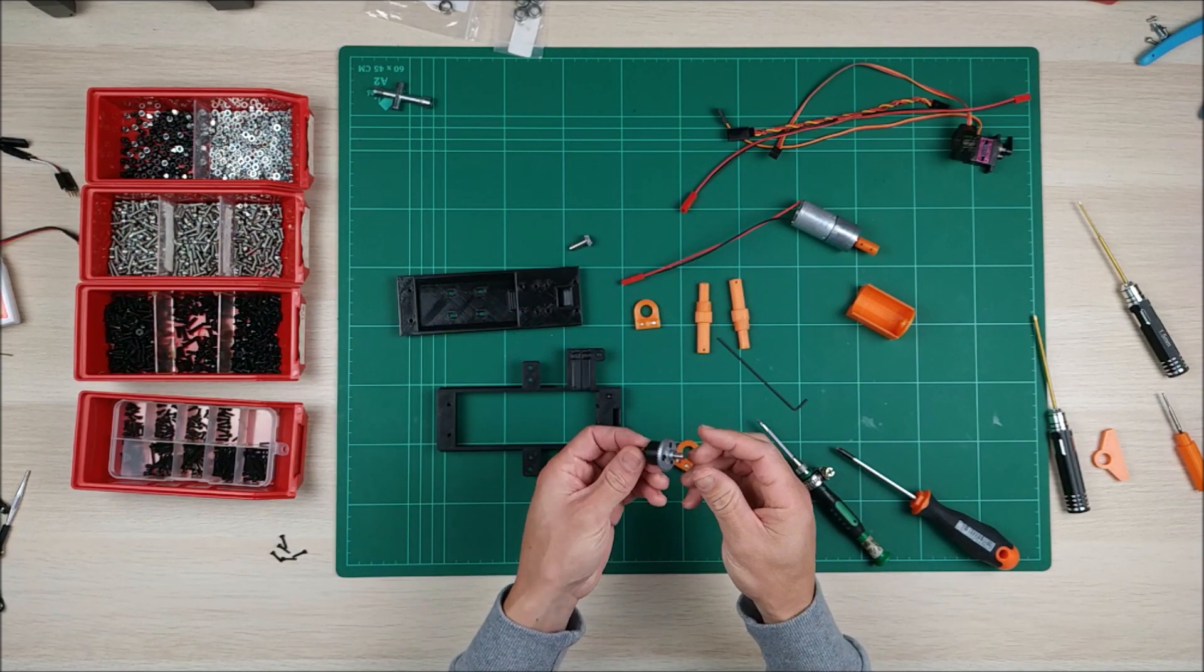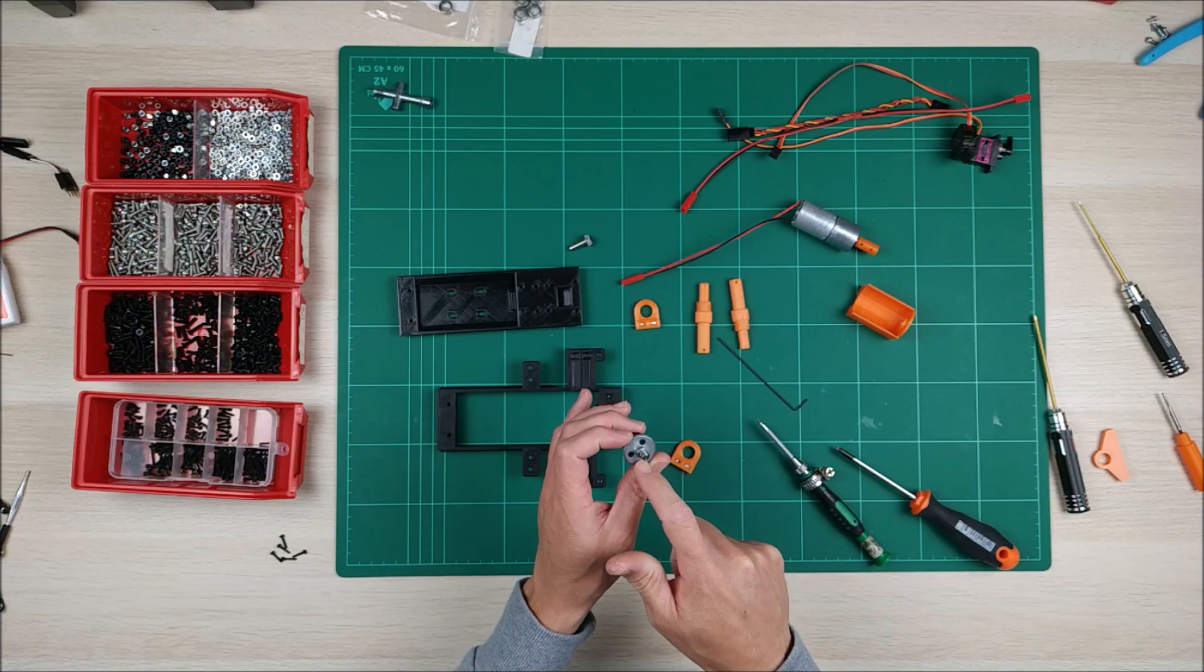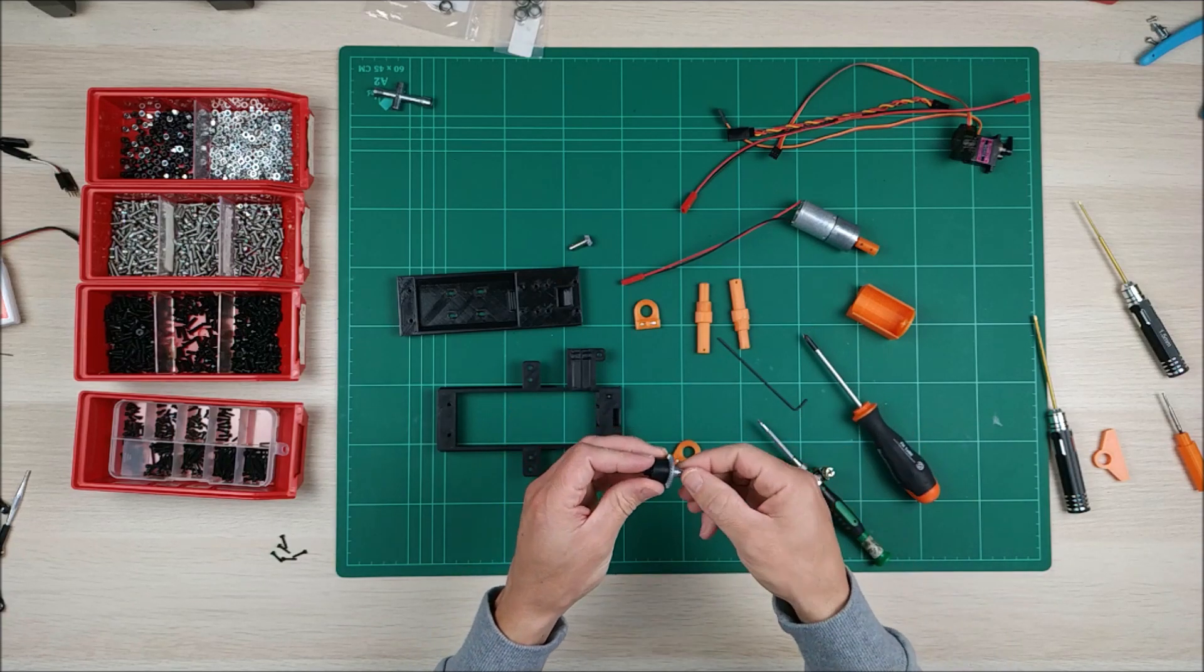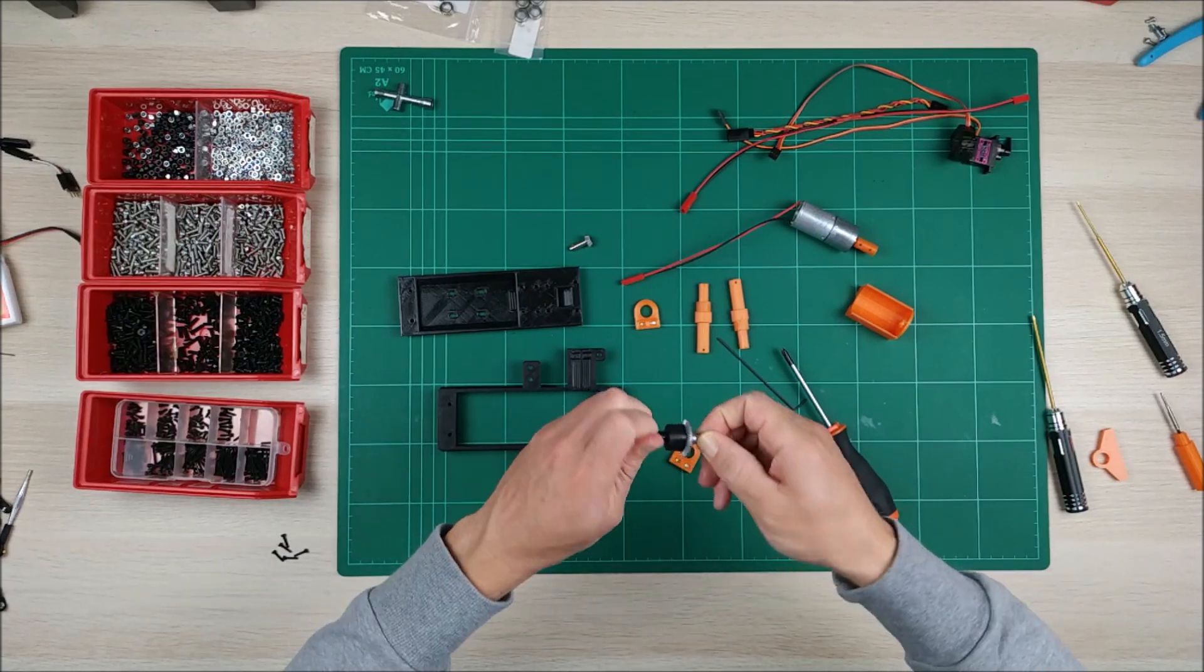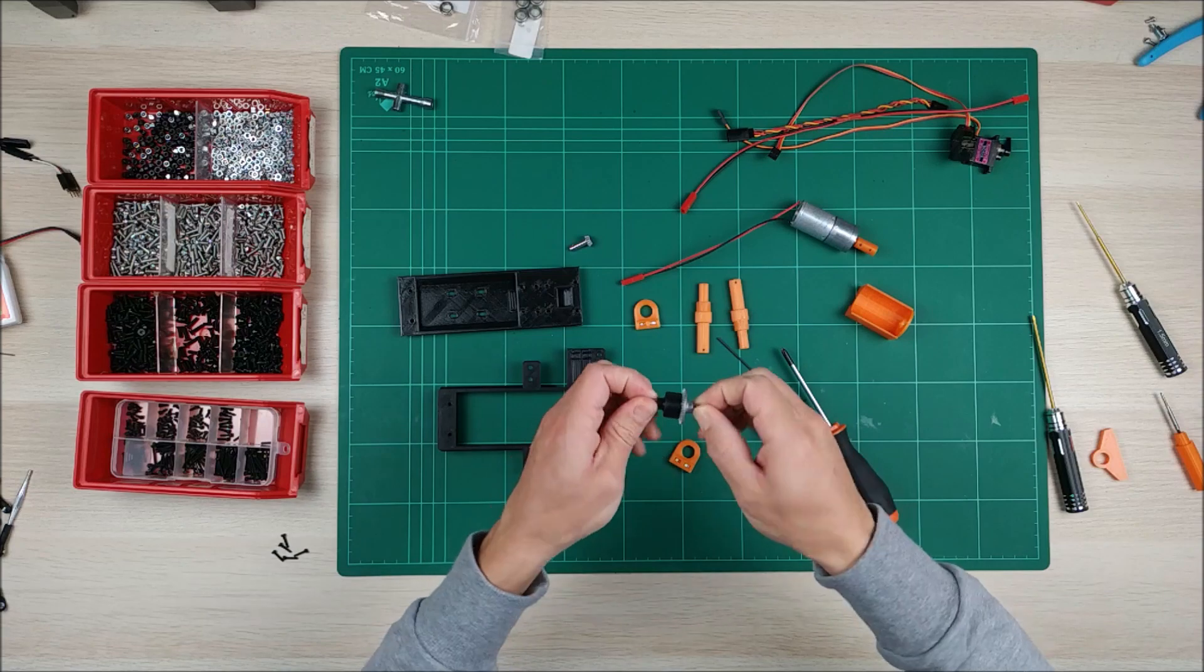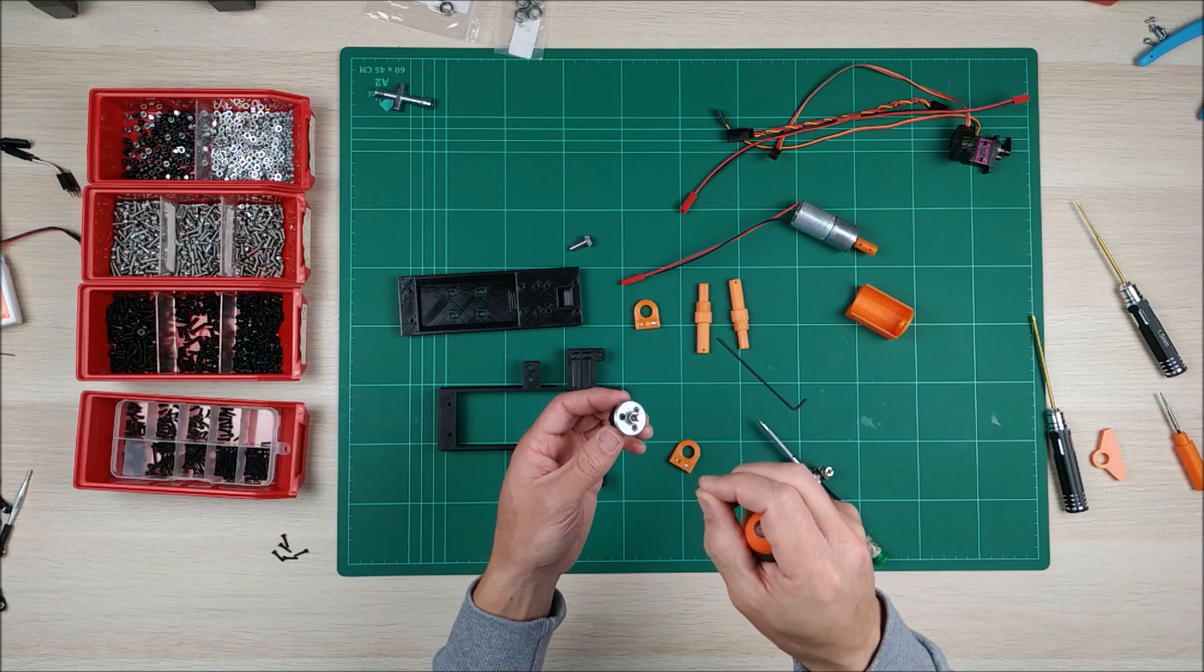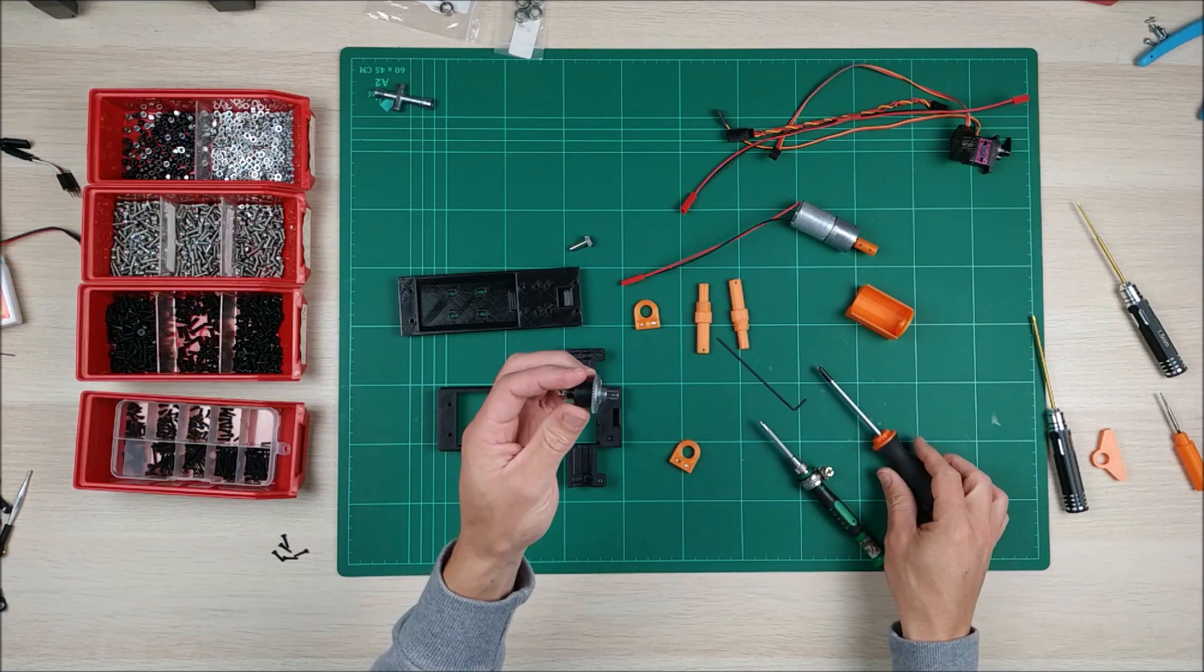So let's get to work. First of all, we're going to assemble this differential. Before doing anything, make sure that these screws are not too tight because sometimes when you buy it, the screws are too tight so it doesn't work. You have to check that this is going to rotate freely. It's not really smooth but it has to rotate at least something. If not, take these screws out and maybe you can put some oil or grease inside and on the gears and then it's going to work much better.